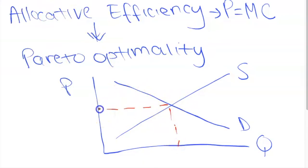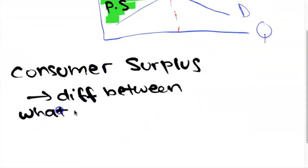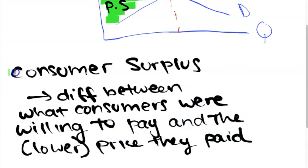Consumer surplus is shown by the area under the demand curve but above the market equilibrium. And producer surplus is the area under the demand curve and underneath the market equilibrium line. When we say consumer surplus, we mean the difference between the prices that consumers were willing to pay and the prices that they actually paid. So for instance, if a consumer was willing to pay $10 for a t-shirt but the t-shirt was sold at $5, the consumer surplus is $5.